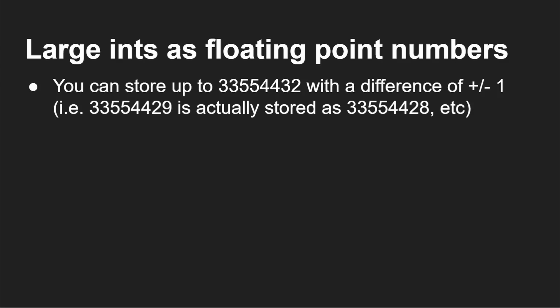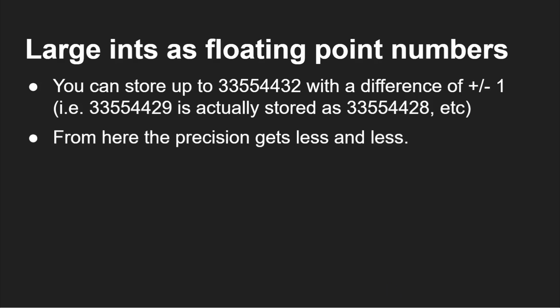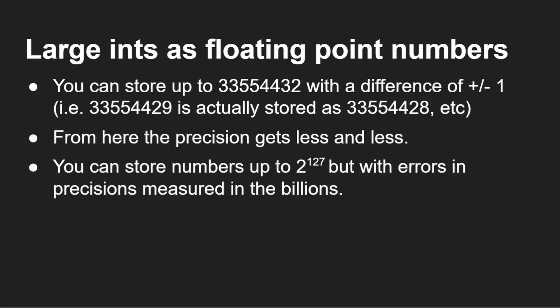You can still assign larger numbers to a float — if you have a bigger number and cast it to a float, it will work; you just can't increment it. It will try its best to store the number. You can store up to 3,355,443,200 within plus or minus one, so for example storing 3,355,442,900.0 would actually store 3,355,442,800 — off by one. Precision keeps getting less and less after that. You can store up to 2 to the power of 127 in size, but the errors by that point are measured in the billions.